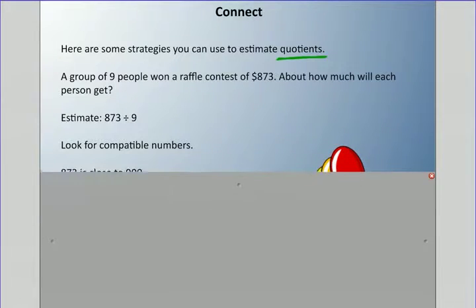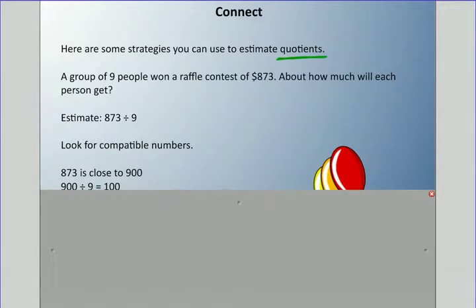Please remember, compatible means we're looking for numbers that are close that work really well. So a compatible number we can use is 873, which is close to 900, and 900 will be a really easy number to work with. So we can do 900 divided by 9, and that equals 100.